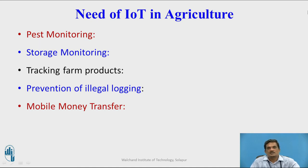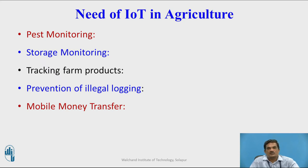We will discuss the need of IoT in Agriculture before discussing its components and how it is being used in agriculture systems. IoT is required in pest monitoring, storage monitoring, tracking farm products, prevention of illegal logging, and mobile money transfer.